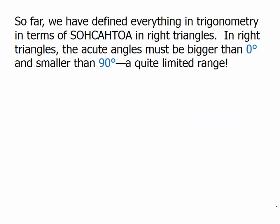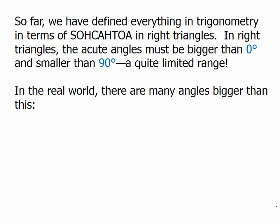In the previous videos, we've just talked about SOHCAHTOA in right triangles. In a right triangle, the acute angles must be bigger than zero degrees and smaller than 90 degrees — that's the range for the angle. And that's a quite limited range if you think about it, because angles can be much, much bigger than that. In the real world, there are many angles outside of that range.